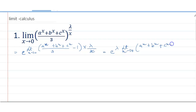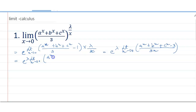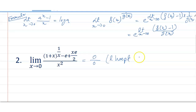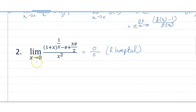Plus c to the power x minus 1 divided by x, plus c to the power x minus 1 divided by x. This equals e to the power lambda times log. We apply L'Hôpital's rule here, so friends you see that.